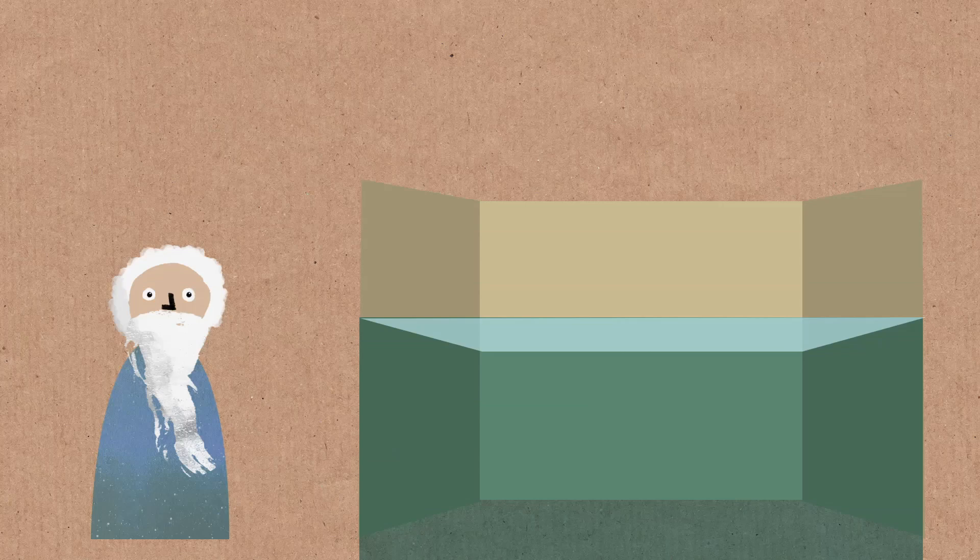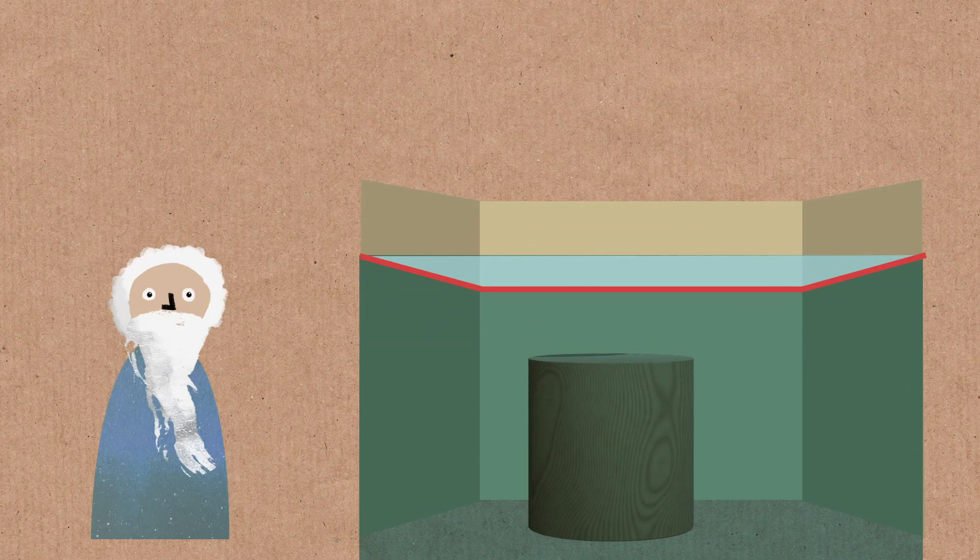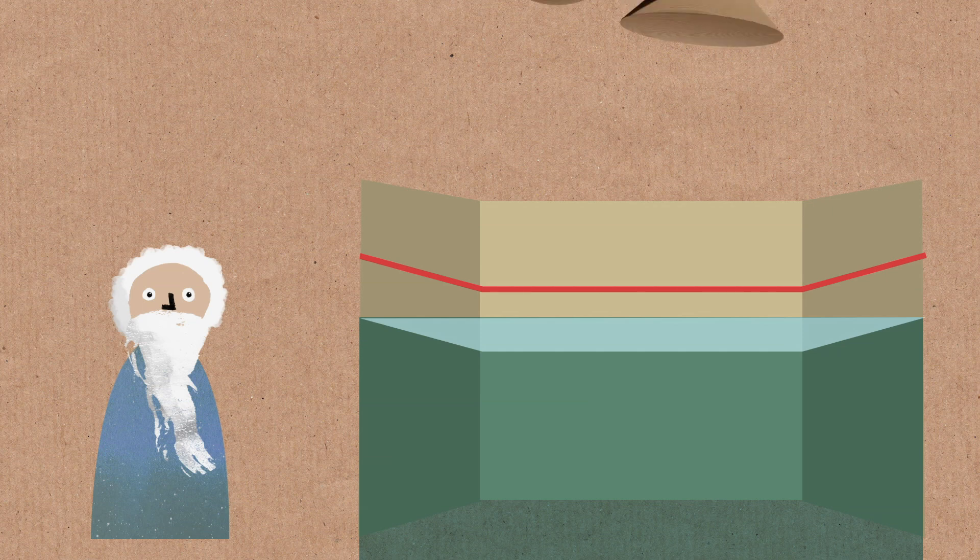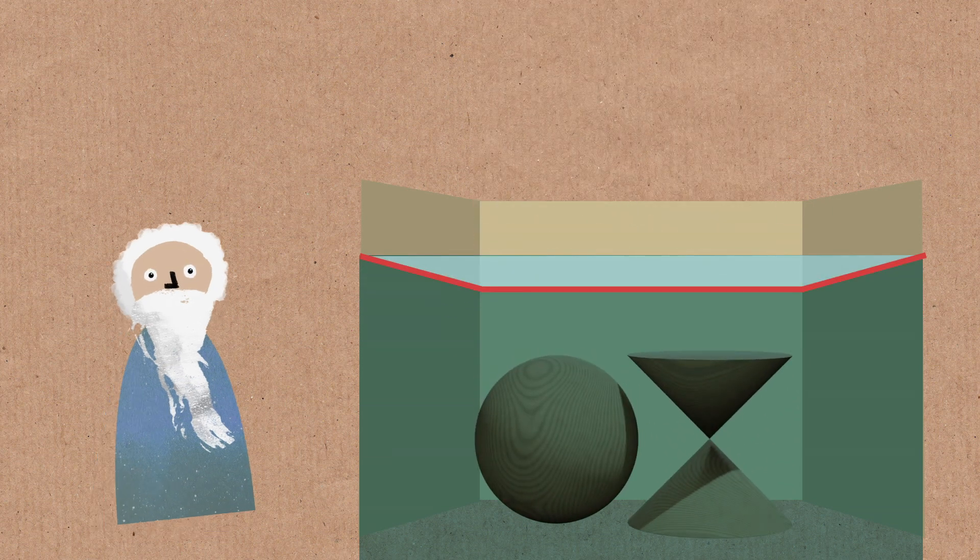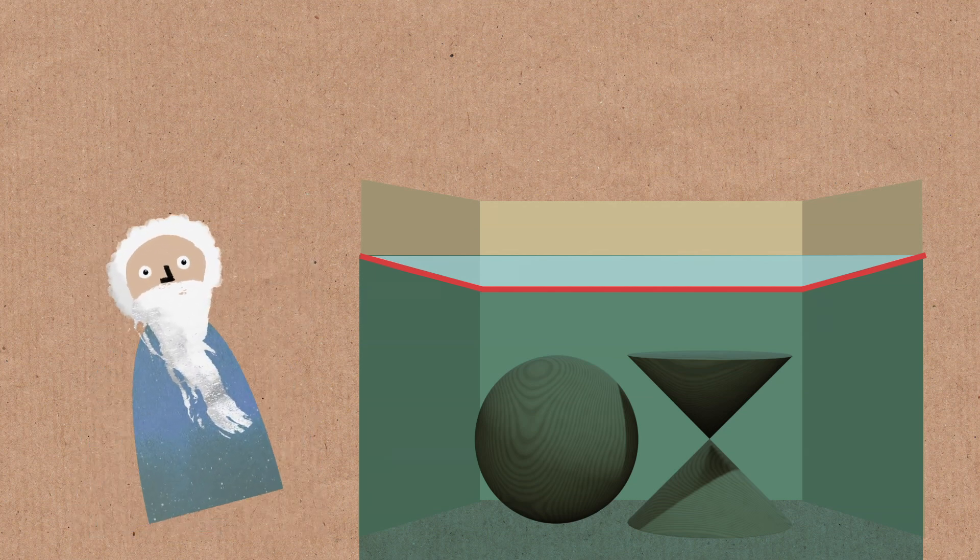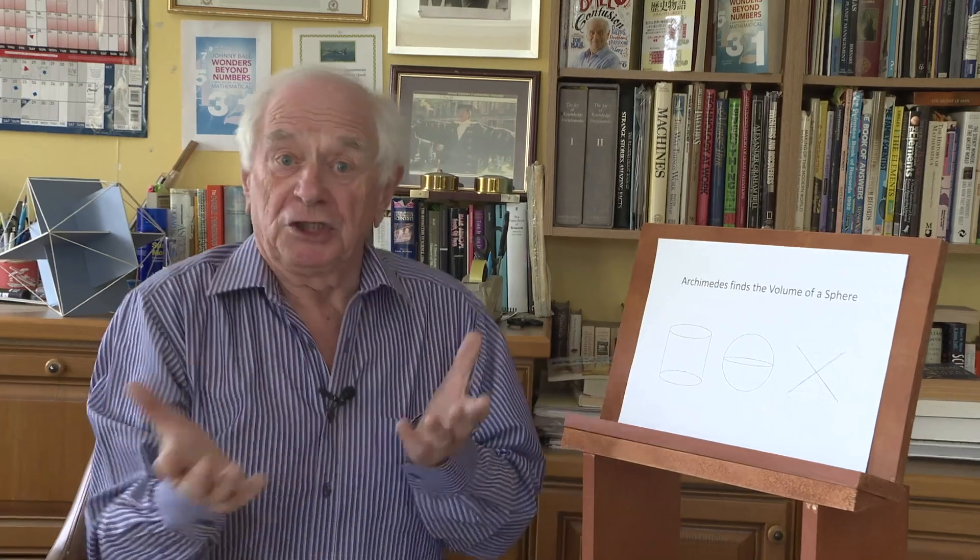Simple. He dunked this in water, let it settle and measured the level of the water. Took it out again. Dunked these two in the same water, and the water came up to exactly the same level. So the volume of that plus that equals the volume of that QED.